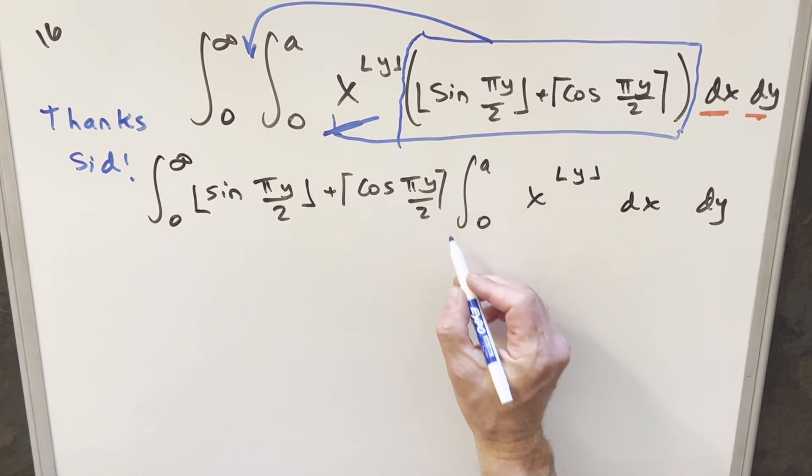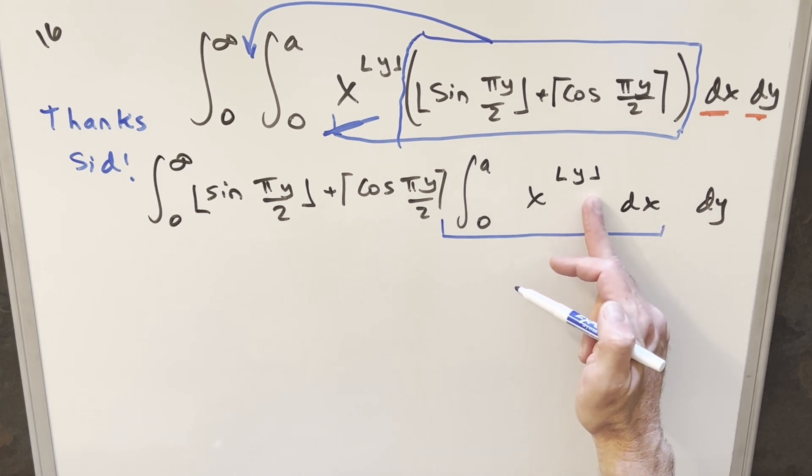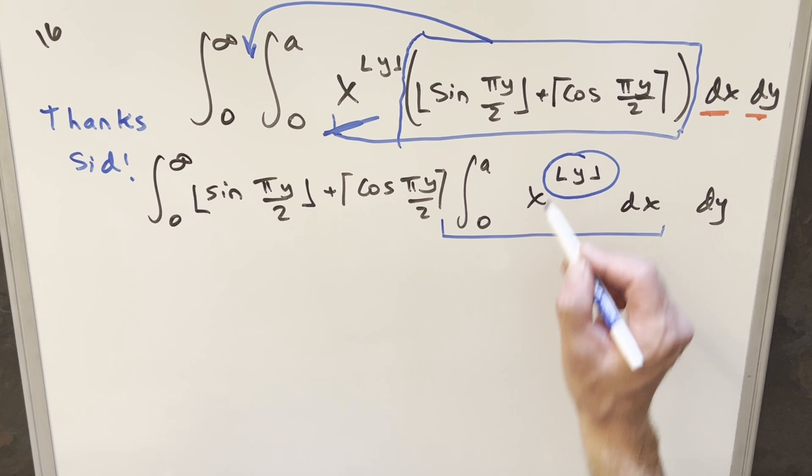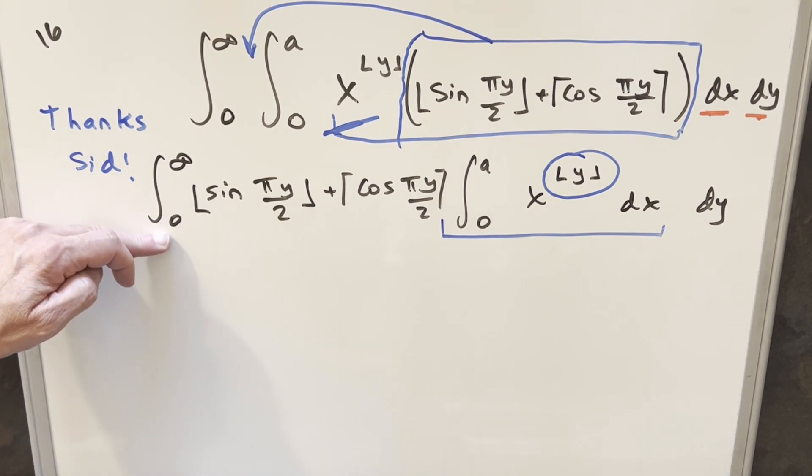So we'll pull this out front as a constant. And now from here, I want to deal with this integral with respect to x, but I need a way to deal with the floor function. The way I like to usually deal with the floor function is by breaking up the integral where the bounds are separated by one.